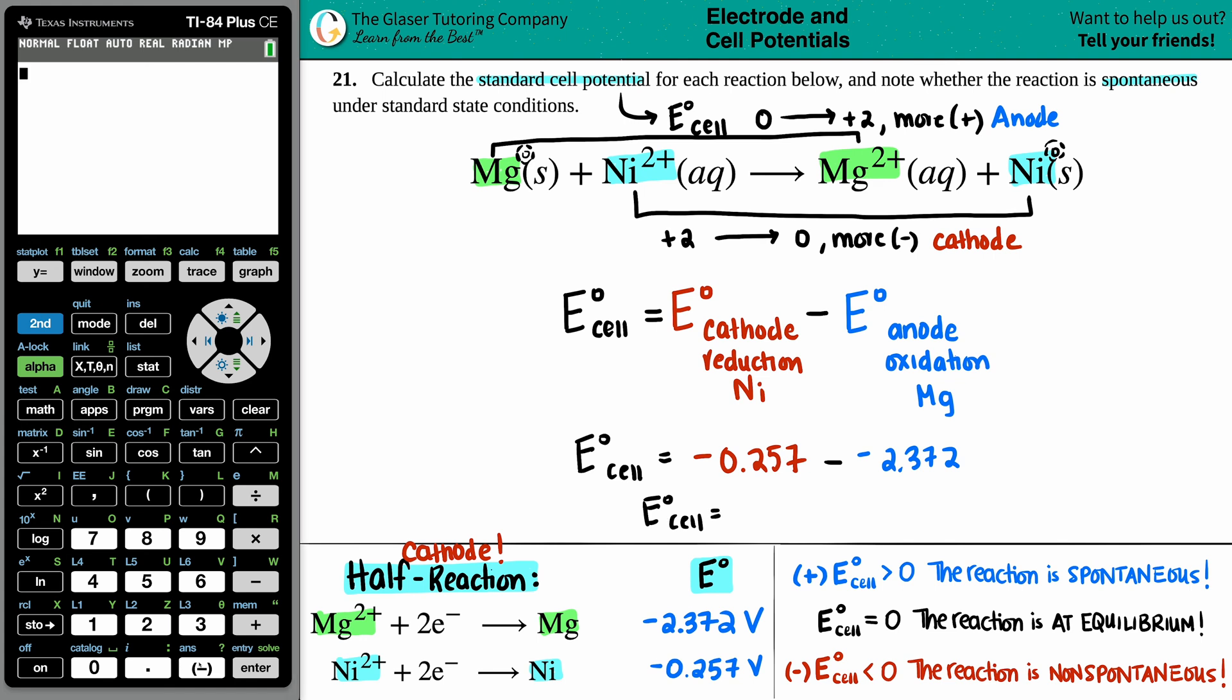Our E cell is, calculator out, negative 0.257 minus a negative 2.372. Just making sure that I put in all the right numbers. That looks good to me. Press enter. And bada bing, bada boom, we get 2.115.